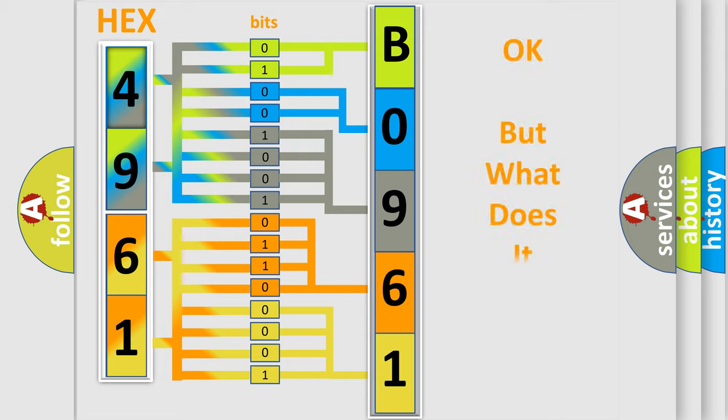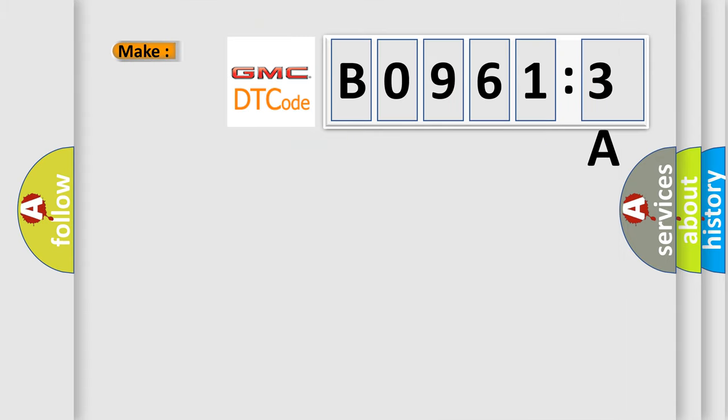The number itself does not make sense to us if we cannot assign information about what it actually expresses. So, what does the diagnostic trouble code B09613A interpret specifically for GMC car manufacturers?